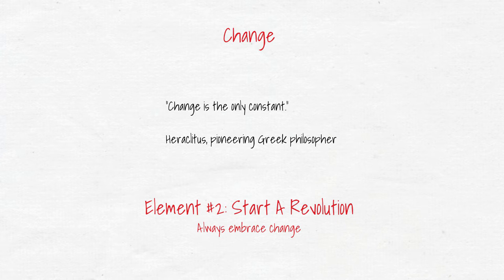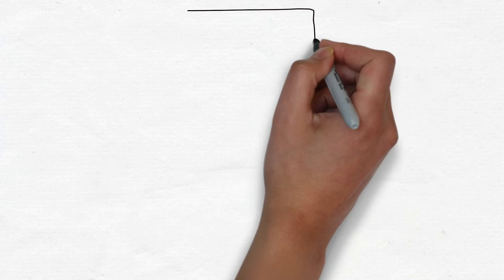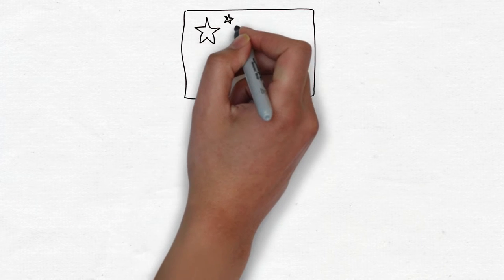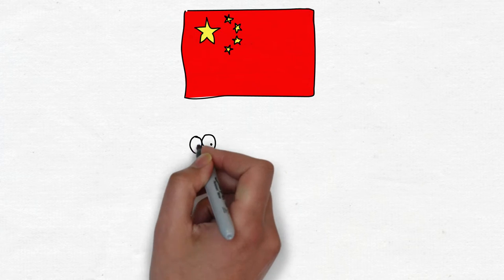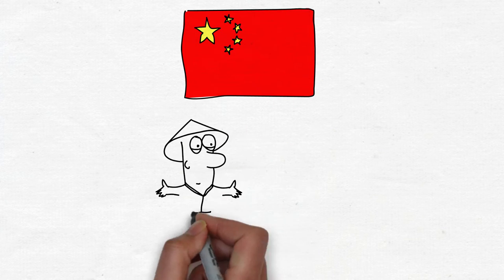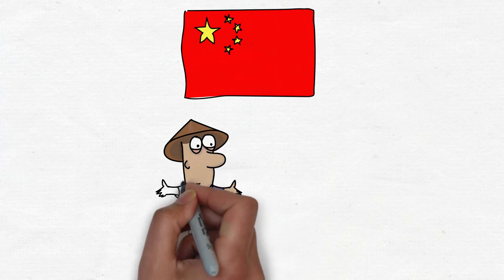As recently as 1800, China was on equal footing with the Western world. In fact, for 18 of the last 20 centuries, China's GDP was the largest in the world. And then it changed.